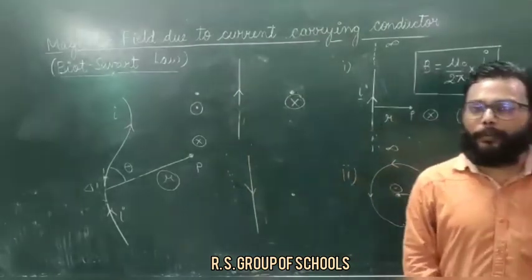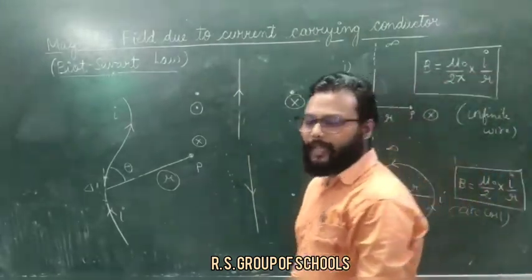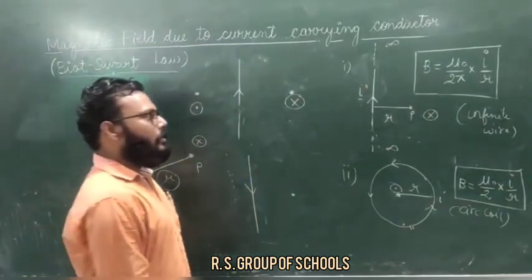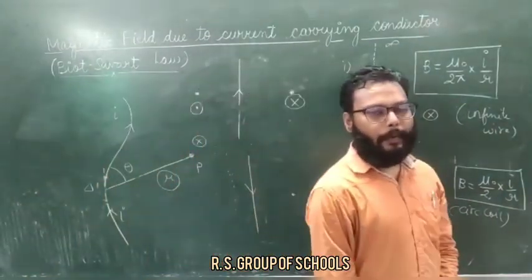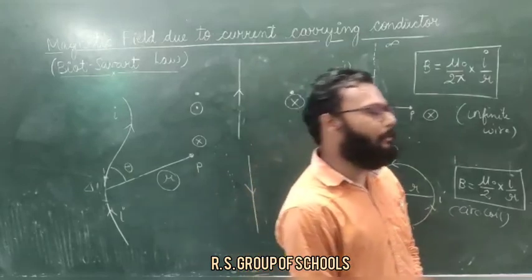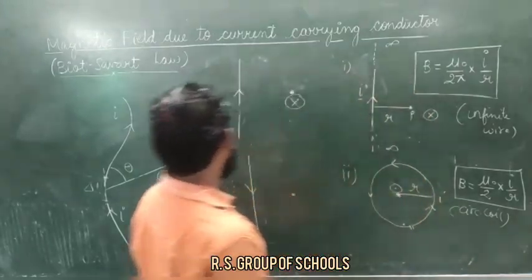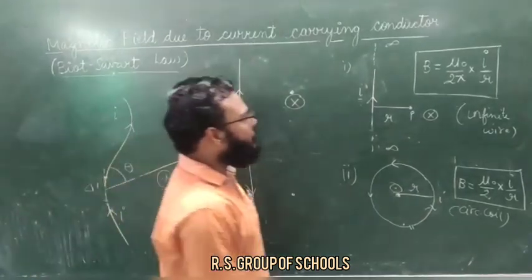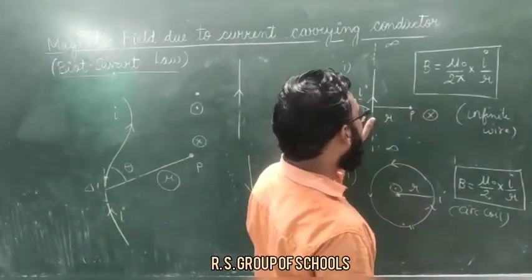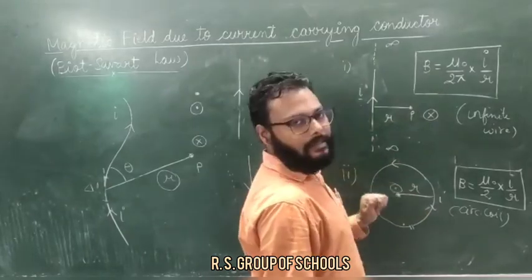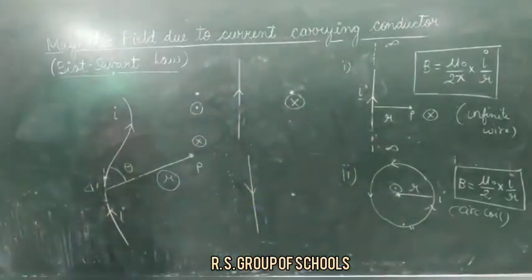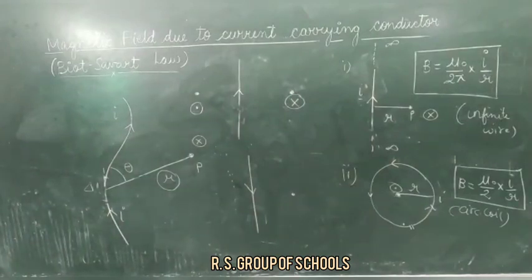Delta B equals mu naught upon 4 pi multiplied by I delta L sine theta upon R squared. Mu naught is the permeability of free space and mu naught equals 4 pi into 10 raised to the power minus 7 henry per metre. Then we learned how to find the direction of magnetic field and the expressions for infinite length wire and circular wire. Thank you, students.